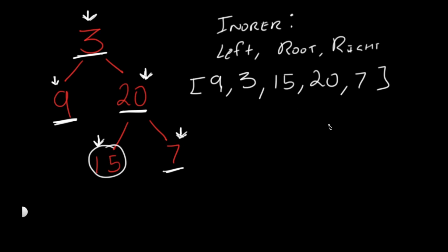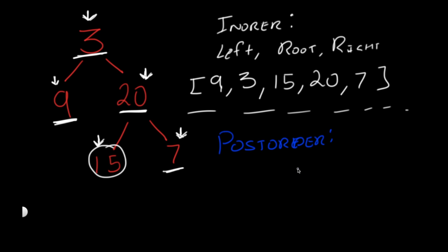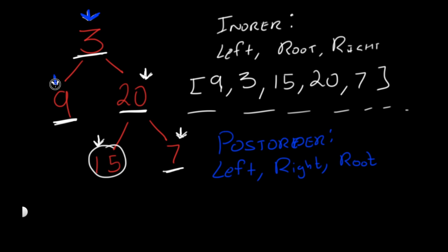Now let's look at the post-order traversal — I'll use blue to represent everything related to post-order. In a post-order traversal, 'post' means after, so we look at the root at the end: first left, then right, then root. We start at 3, go to its left child 9. Now 9 is our root temporarily. We check if it has a left node — it doesn't — and it doesn't have a right node either, so we add 9.